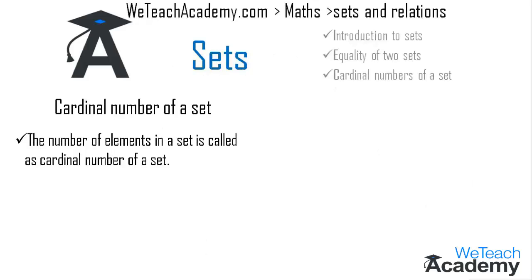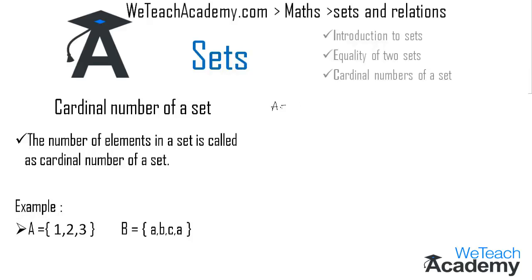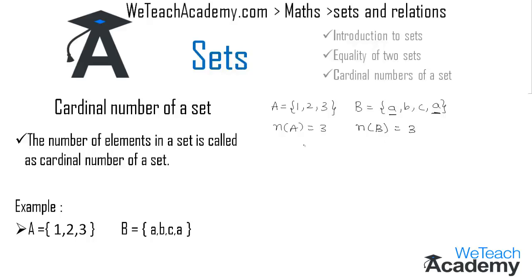Now let us discuss about the cardinal number of a set. The number of elements of a set is called the cardinal number of the set. For example, set A = {1, 2, 3} and set B = {a, b, c, a}. We represent the cardinal number as n(A). The number of elements in set A is three. In set B, 'a' is repeated twice, so the cardinal number of set B is also three. A null set has no elements, so its cardinal number is zero.